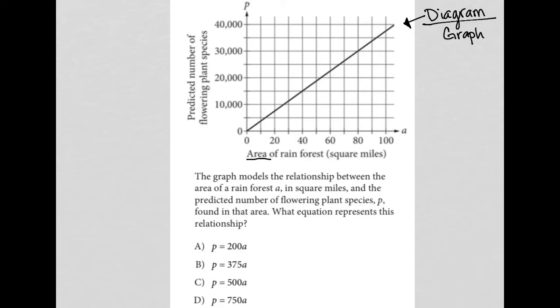The x-axis is the area of rainforest in square miles, and the y-axis is the predicted number of flowering plant species.